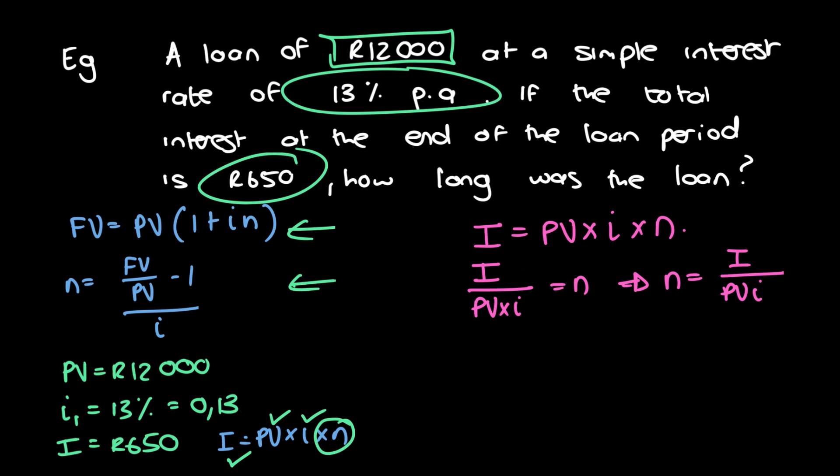So let's go ahead and put in all the values. So n is equal to 650 divided by 12,000 times 0.13, and that's going to give us 0.416 kind of a situation. And what units is it in? Remember, it corresponds to the interest units. So this is years. So we can times that by 365 to get it to be 152.08 days kind of situation. But 0.416 years is correct. We can do it times about 12 to get the number of months and so on.